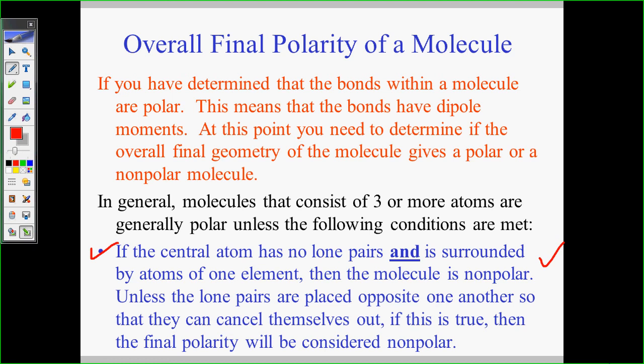If the central atom has no lone pairs and is surrounded by atoms of one element, then the molecule is not polar. I would definitely be rocking that out as well. All right. On your little molecular chart, the one I gave you that you need to memorize, it'd probably be a good idea to know what's polar or nonpolar. I'm just saying. Unless the lone pairs are placed on opposite one another so that they can cancel themselves out, if this is true, then the final polarity will be considered nonpolar. Very rare that you're going to have something like this.